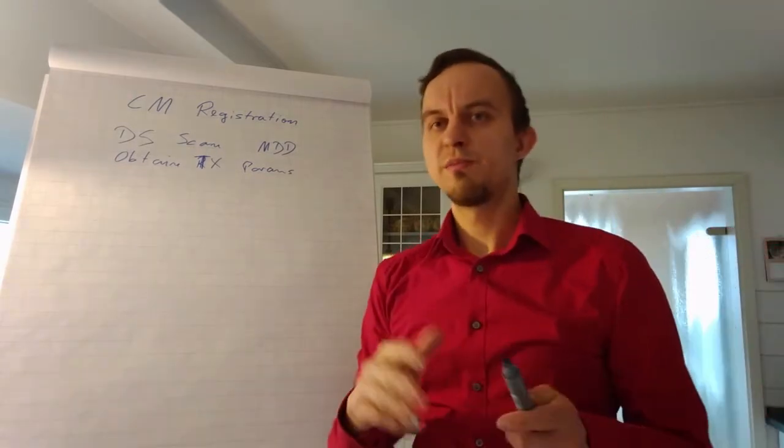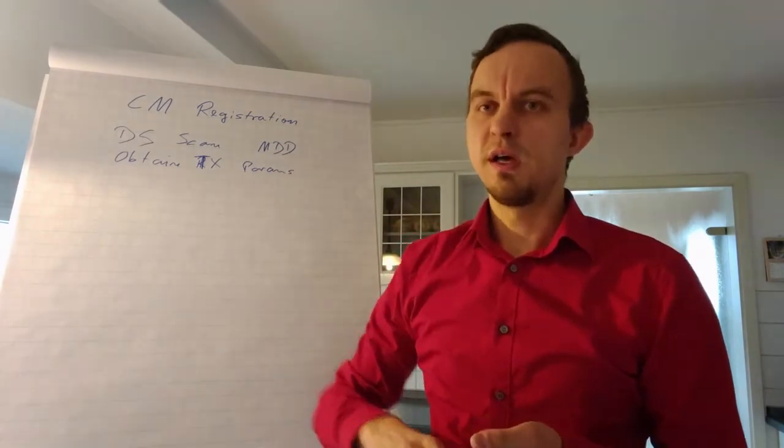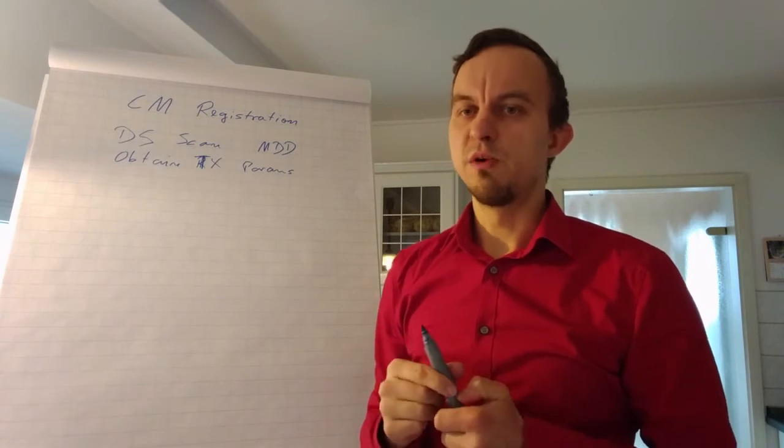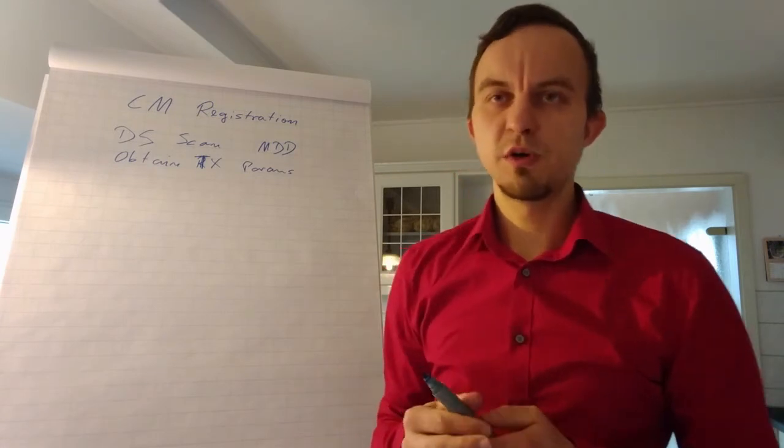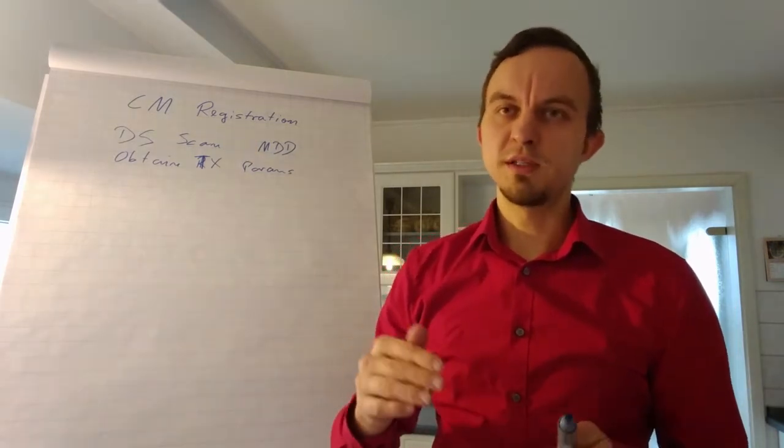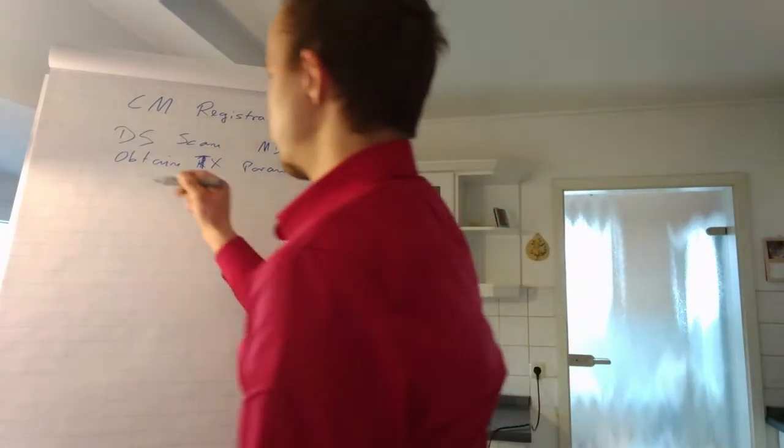What the cable modem does is that it just powers up or powers down its value and tests whether the CMTS can hear the cable modem. Once the CMTS hears the cable modem, it says okay, maybe this was 5dB too much or 5dB too less, so please adapt your transmit power. And this process is called ranging.